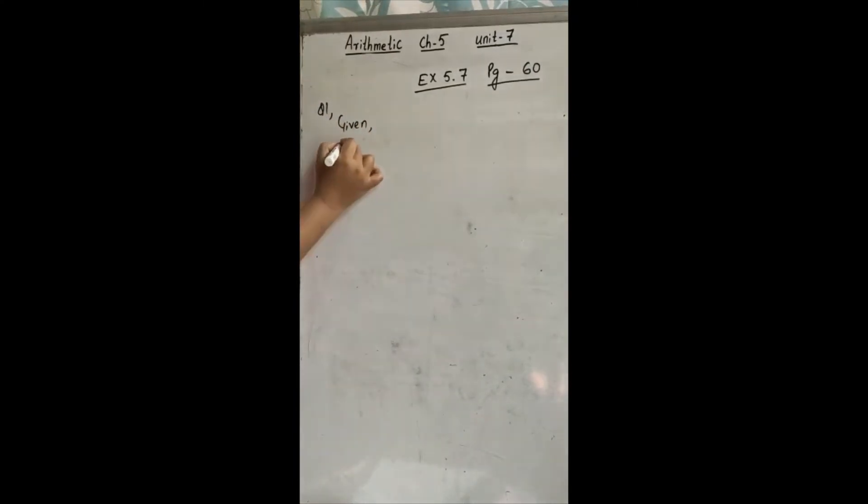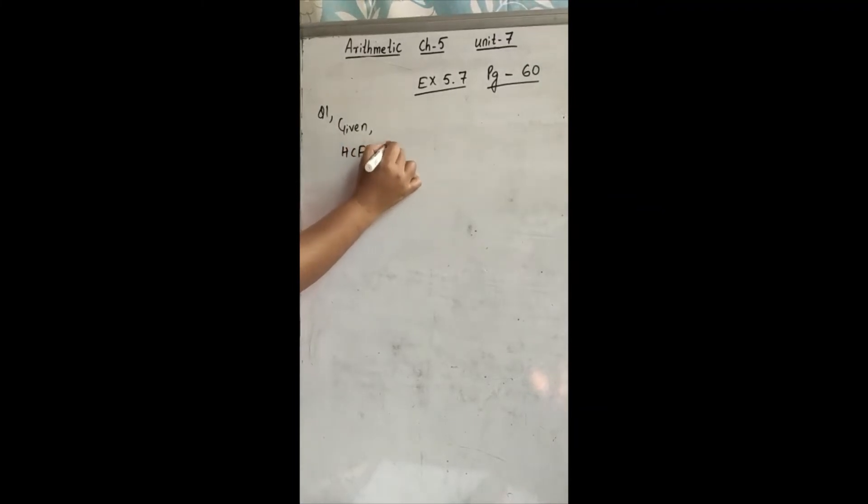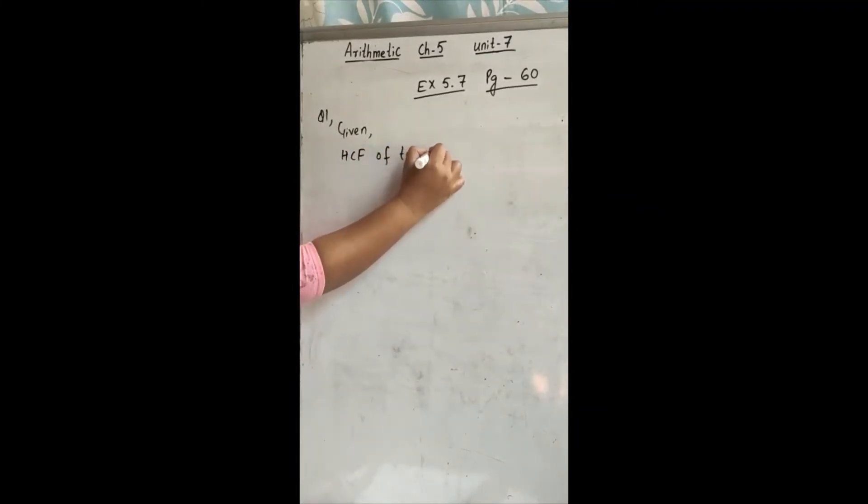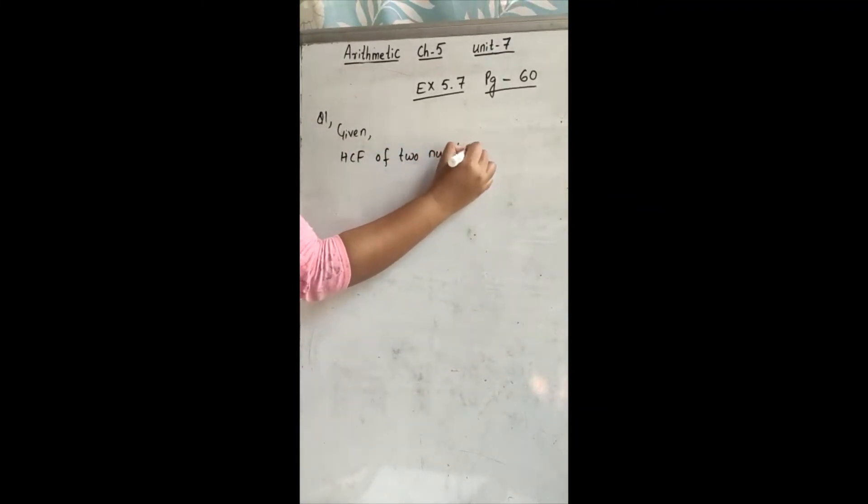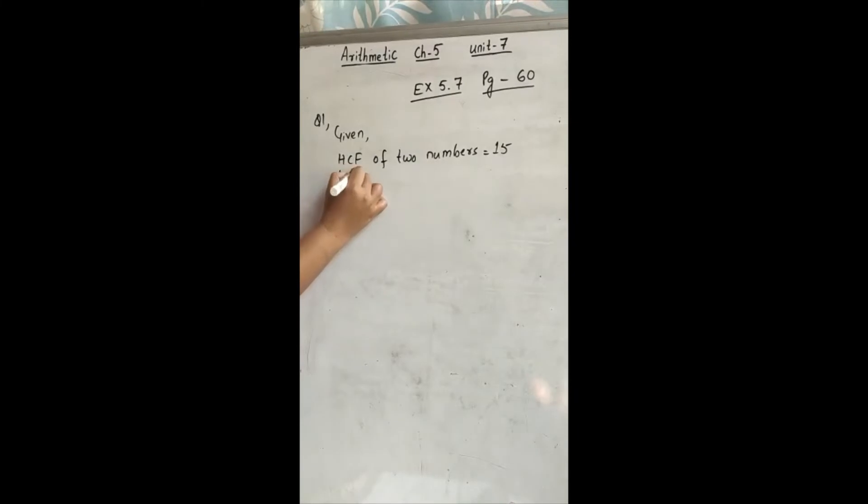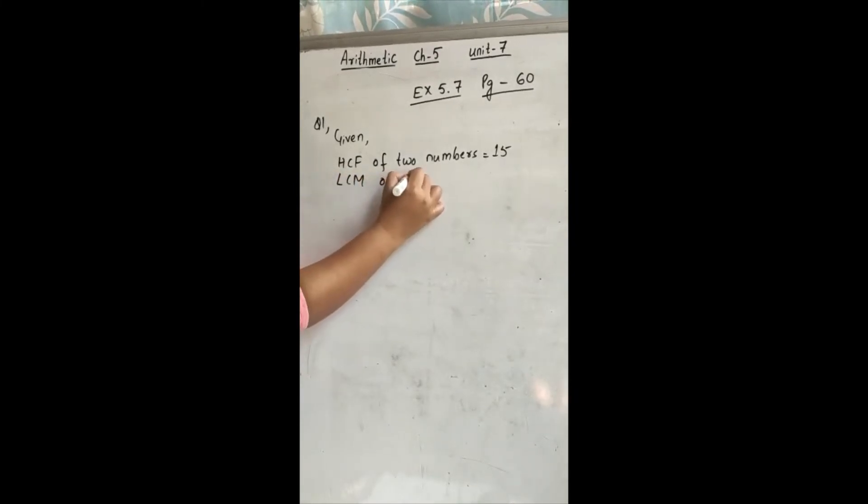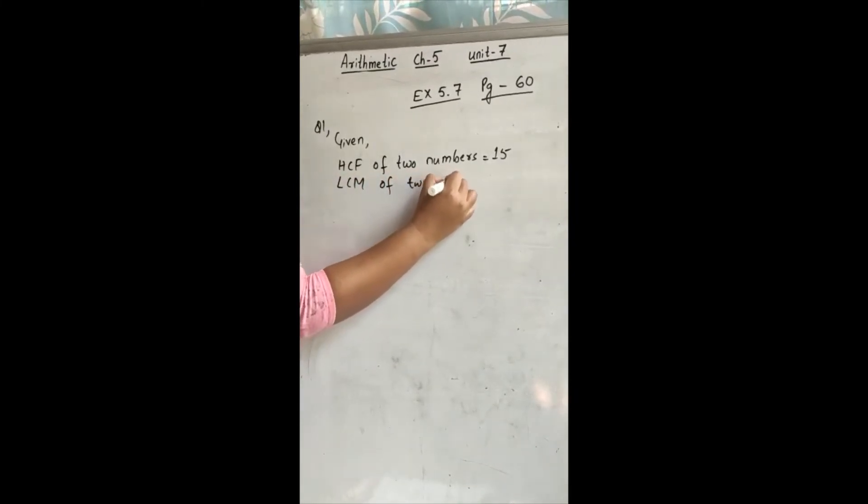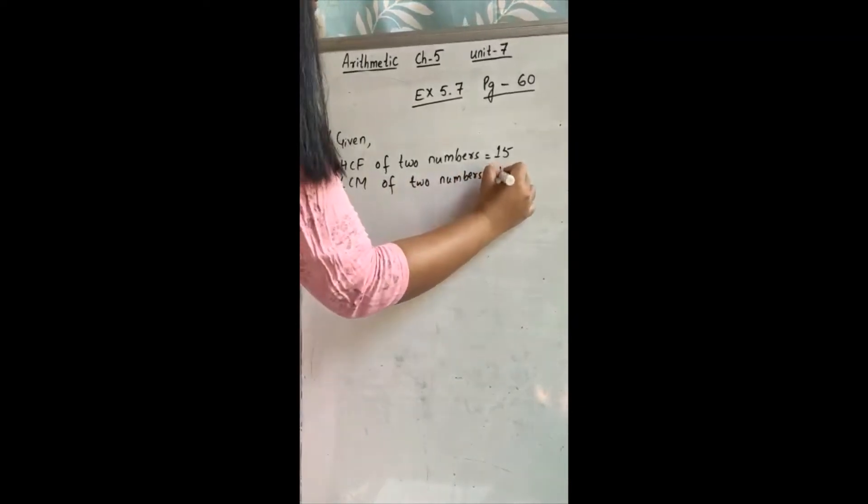HCF of two numbers is given. HCF of two numbers equal to 15. And what else is given? LCM is also given. LCM of two numbers. That is 45.